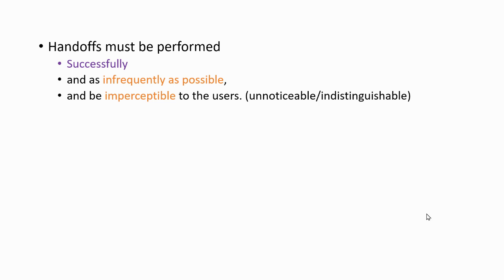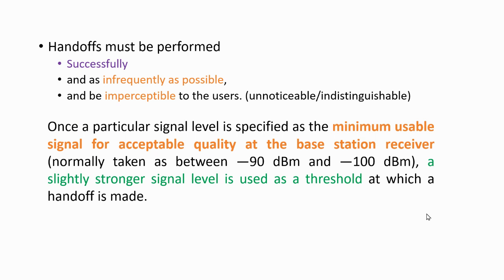The third criteria: one particular signal level is specified as the minimum usable signal for acceptable quality at the base station receiver. For example, traveling from Matur base station to Angamali base station, at the cell border between Angamali and Matur, in order to maintain a call I should have a received power of at least minus 90 dBm or minus 100 dBm. Beyond that, if it becomes minus 101 dBm, the call is terminated — the call is dropped. So just before that point, the handoff must take place.